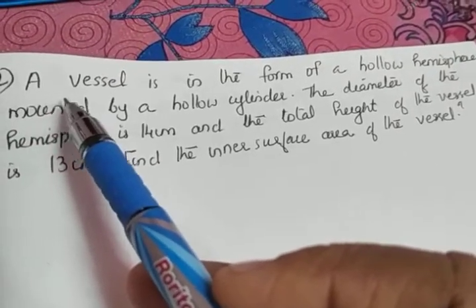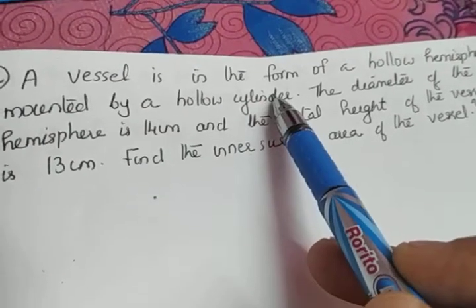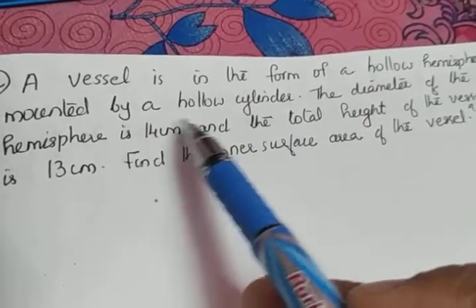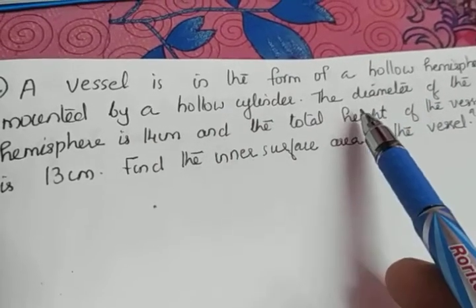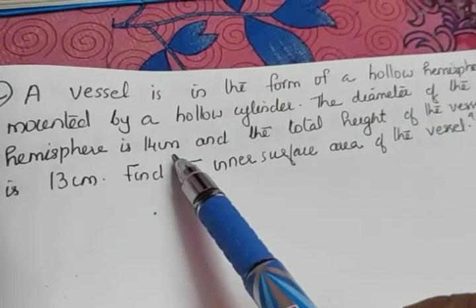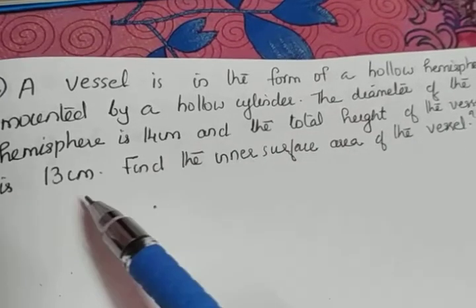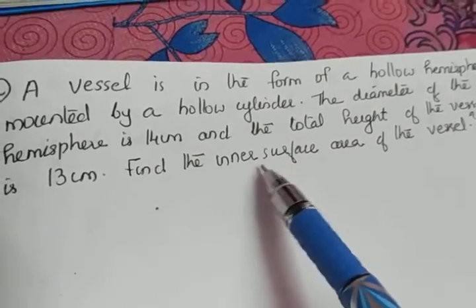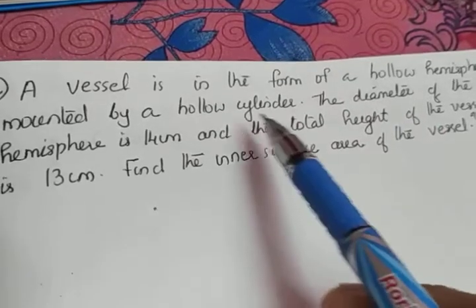The next question: A vessel is in the form of a hollow hemisphere mounted by a hollow cylinder. The diameter of the hemisphere is 14 cm and the total height of the vessel is 13 cm. Find the inner surface area of the vessel.